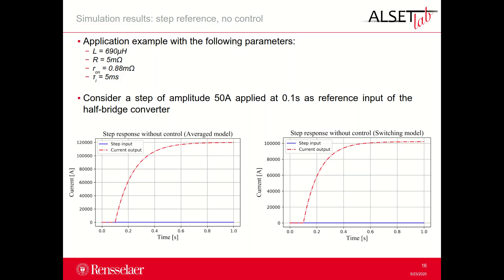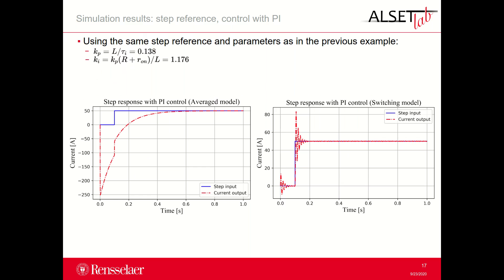In this section the simulation results are presented. The parameters of the system are indicated at the top of the slide. Starting with results using a step signal as reference, the AC output current does not track the step input for both systems with the average and switching model of the half-bridge converter. The final value of the output AC current is much higher than the step input, which cannot be clearly seen in the plots due to the big difference in magnitudes of the two curves. Introducing PI control, we can see that now the system is able to settle at the value corresponding to the step input. The initial negative overshoot for the average model is due to the initial conditions of the system. With the switching model there are some oscillations of the output current at initialization when the step is applied.